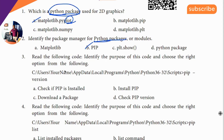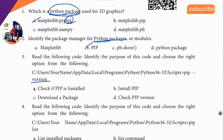Third question: read the following code and identify the purpose. The code is about version — so the answer is version. Check pip version — so the answer is version.